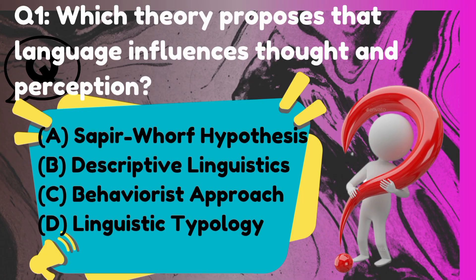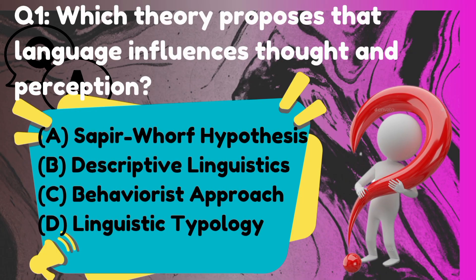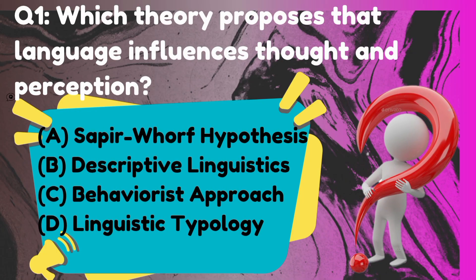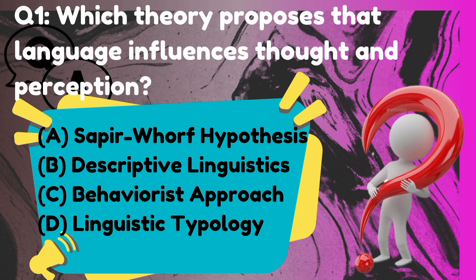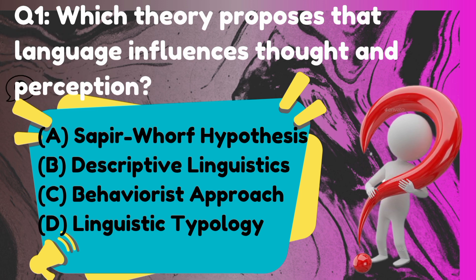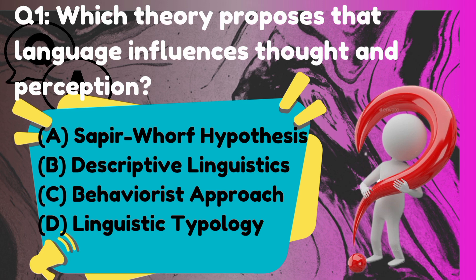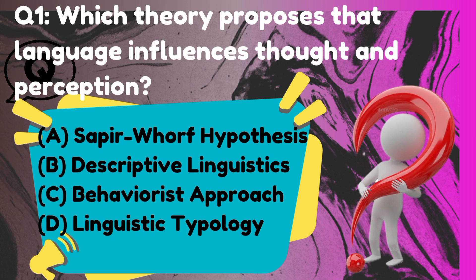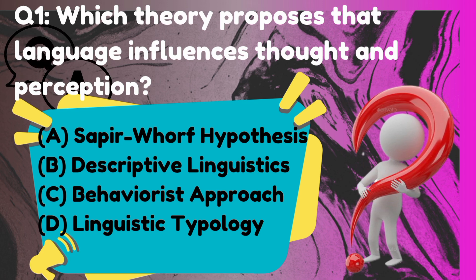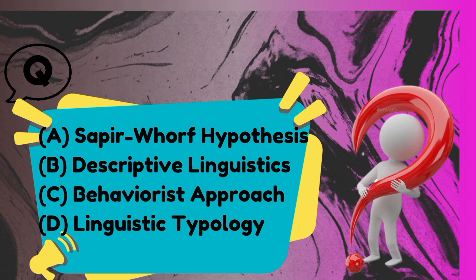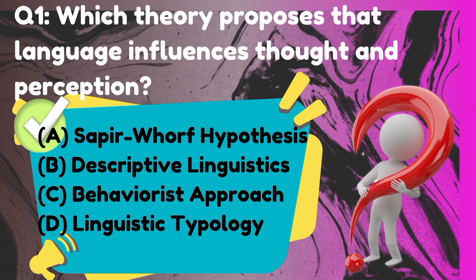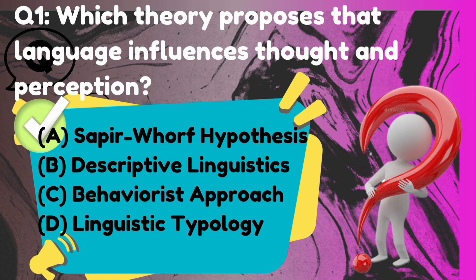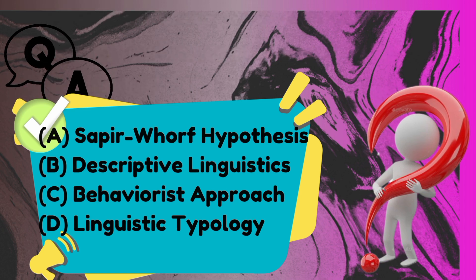Which theory proposes that language influences thought and perception? The correct answer is option A: the Sapir-Whorf hypothesis.